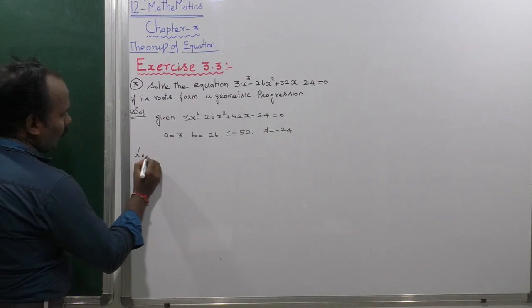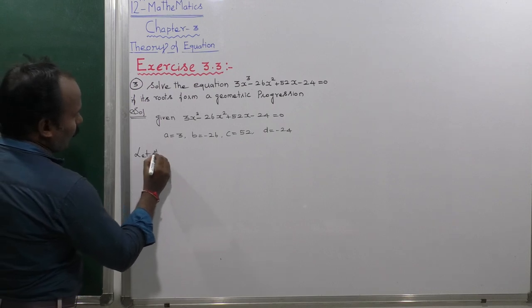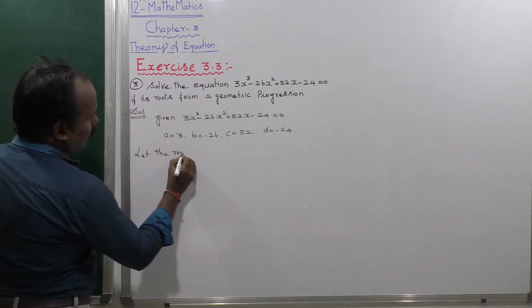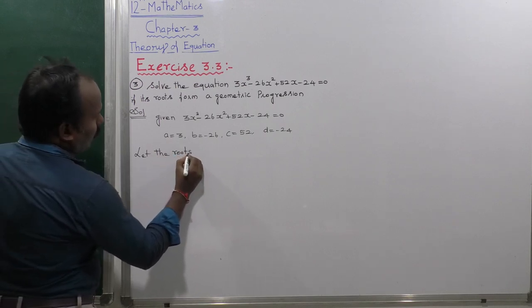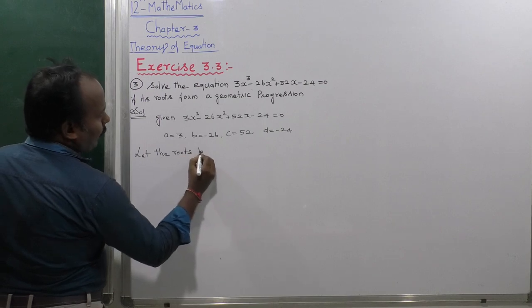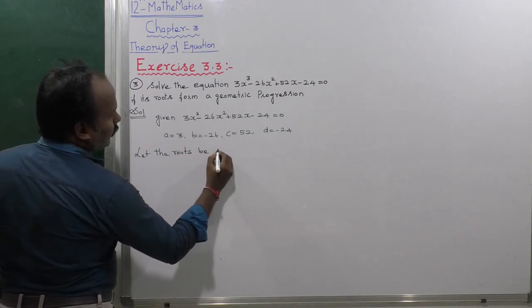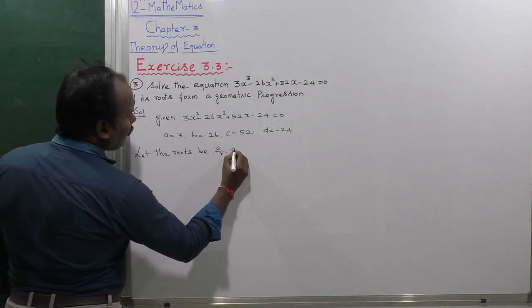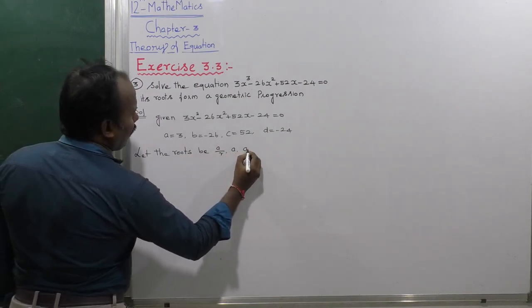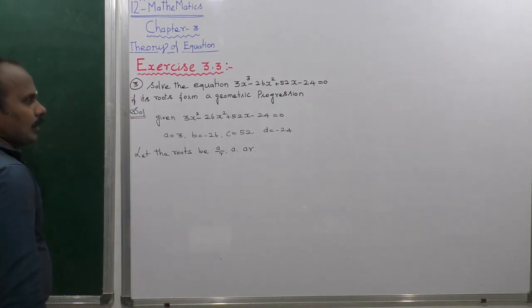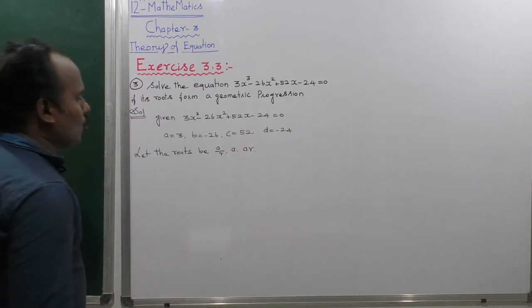Let the roots be A by R, A, and A·R. That is in geometry — in GP, geometric progressions.